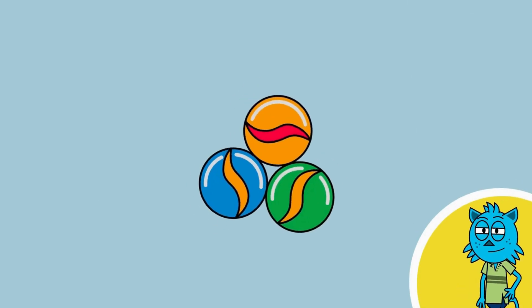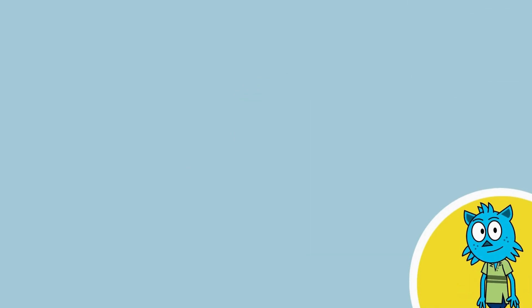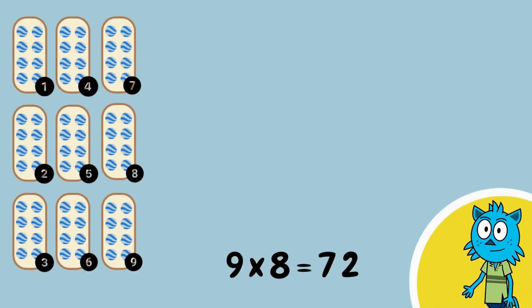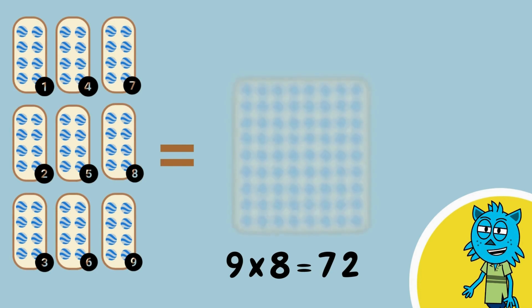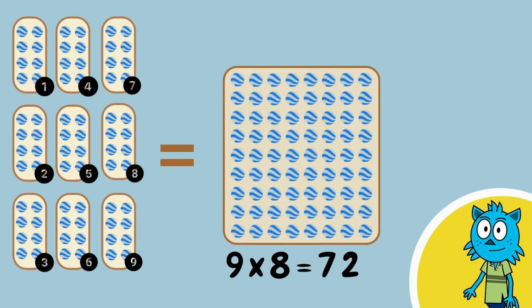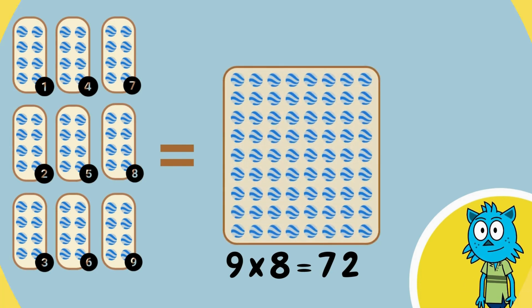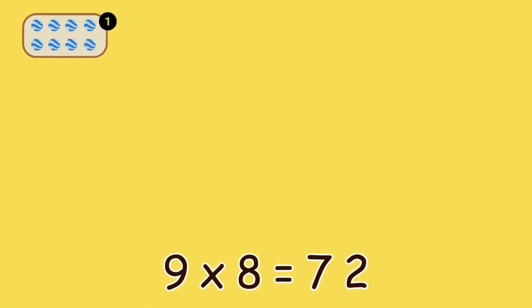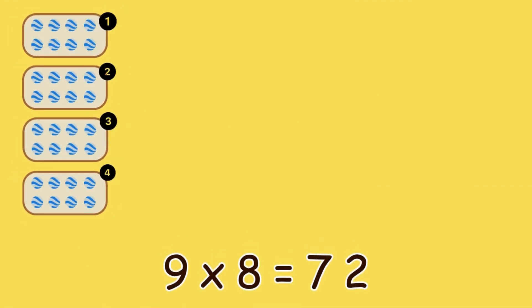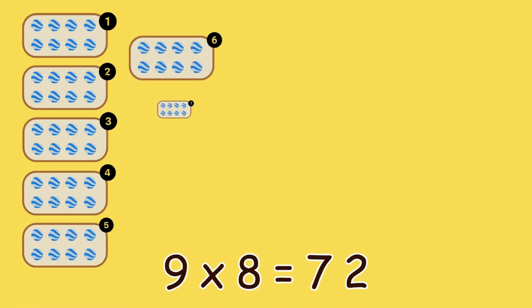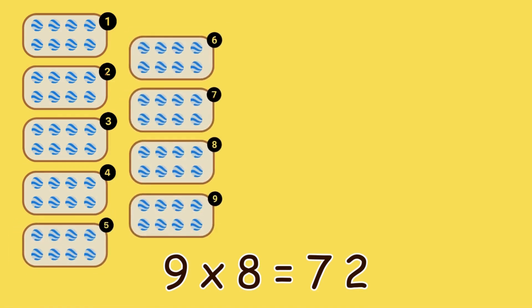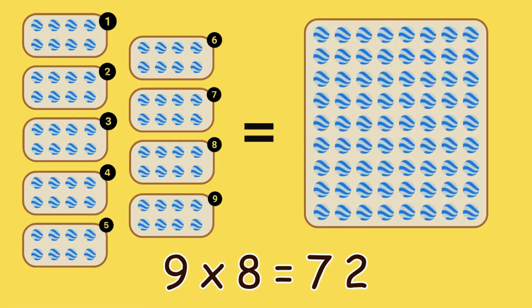Let's count marbles. Nine groups of eight marbles equals seventy-two marbles. Nine times eight — one, two, three, four, five, six, seven, eight, nine — is seventy-two.